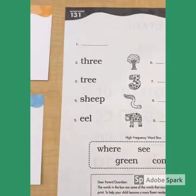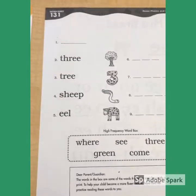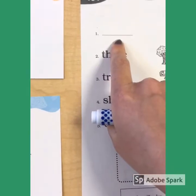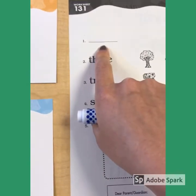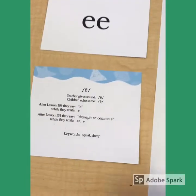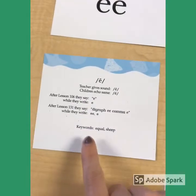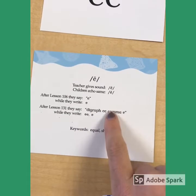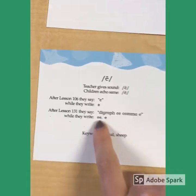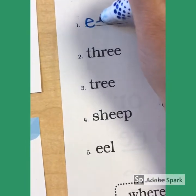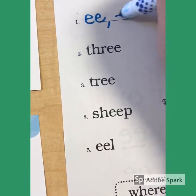Alright, now we're on the back side. Look at line number one. On this line, I want you to write the two things that make the EE sound. We have digraph EE and then comma E. So we're going to write: digraph EE, comma E.